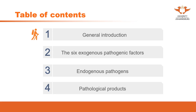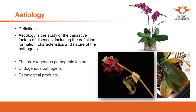For the etiology of Chinese medicine and acupuncture, we are going to group them into three categories. What is etiology? By definition, etiology is the study of the causative factors of diseases, including the definition, formation of diseases, characteristics, and the nature of pathogens. So it is a study that examines the causes of diseases.